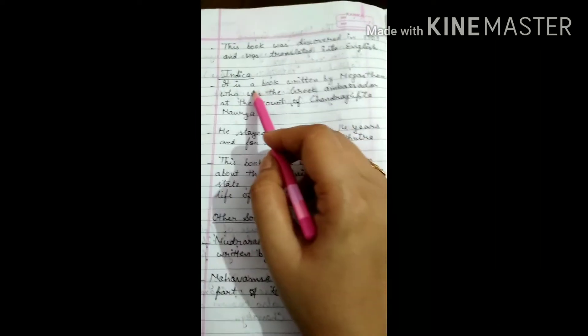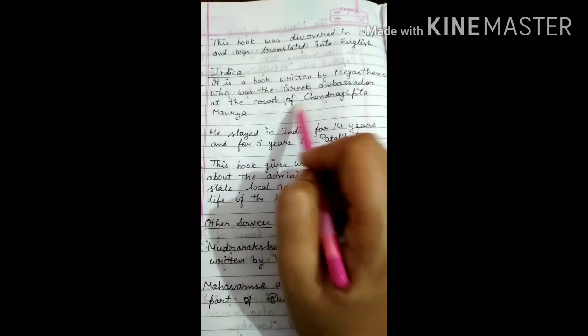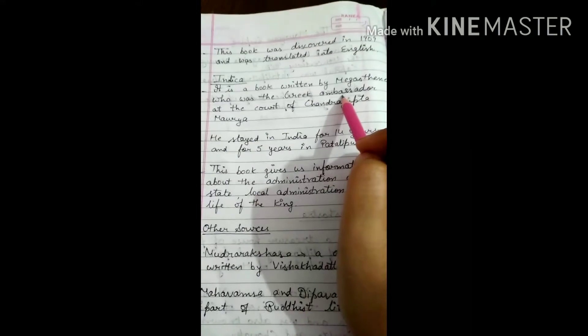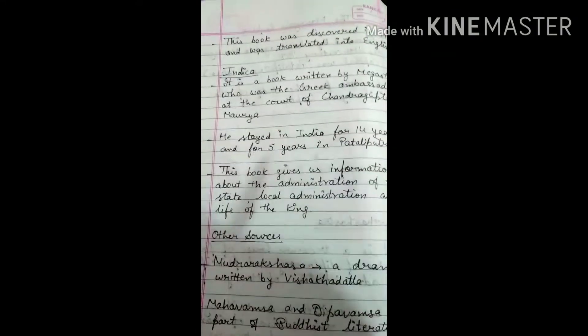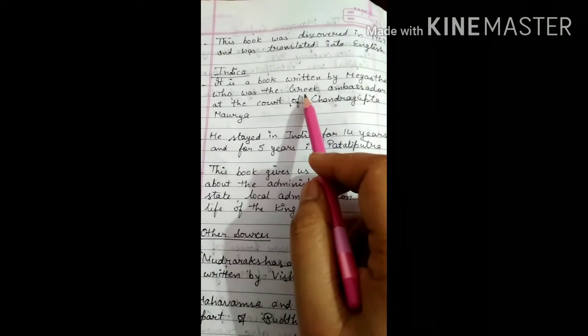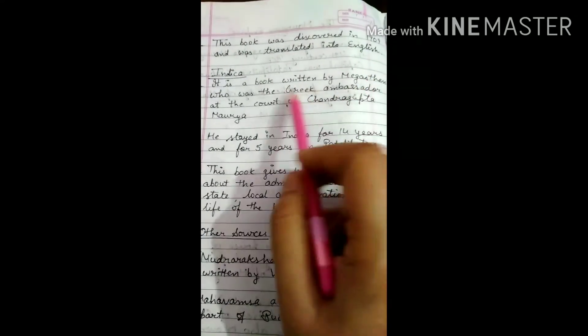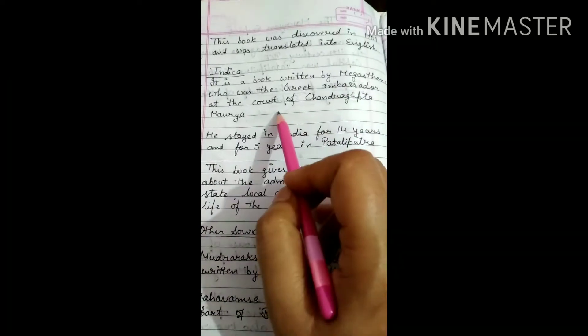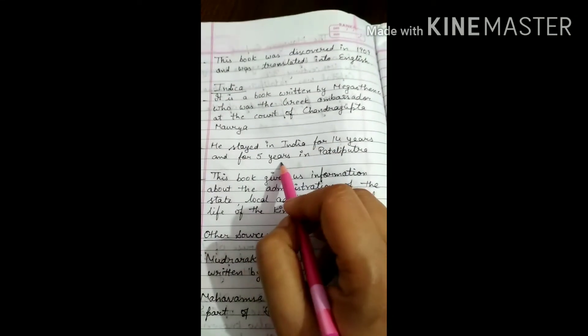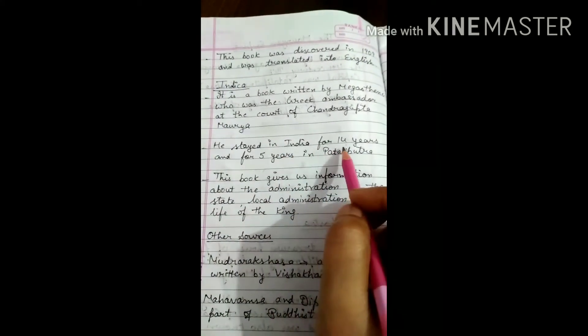Second is Indica. It is a book written by Megasthenes, who was a Greek ambassador at the court of Chandragupta Maurya. He was an ambassador, a messenger from the Greek ruler to the Indian king. Megasthenes wrote the book Indica and he stayed in the court of Chandragupta Maurya. He stayed in India for 14 years, and out of these 14 years, for 5 years he stayed in Pataliputra.